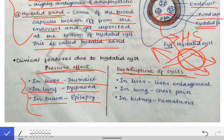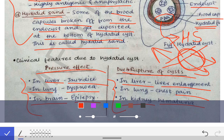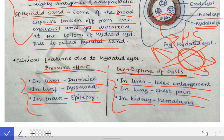When the cyst ruptures and hydatid fluid is released, additional symptoms occur depending on location: liver involvement causes liver enlargement, lung involvement causes chest pain, and kidney involvement causes hematuria.